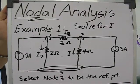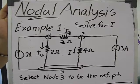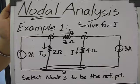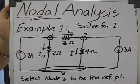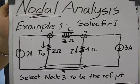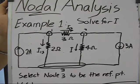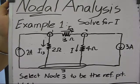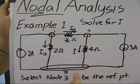So, we go now to our example. In this example, we have a two ampere current source and a three ampere current source. Counting the nodes, we have one, two, three nodes.